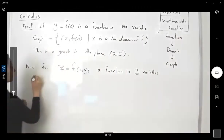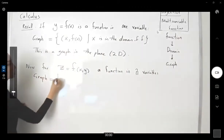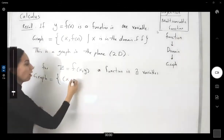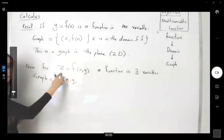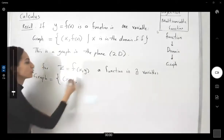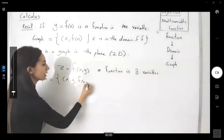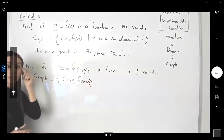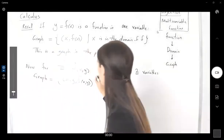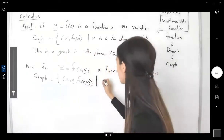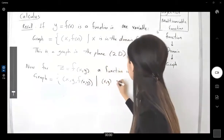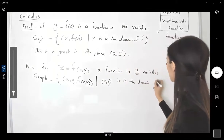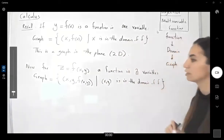The graph is defined this way. The graph is the set of all x, y, and z — where the last component, the output, is f of x and y — such that x and y is in the domain of function f.